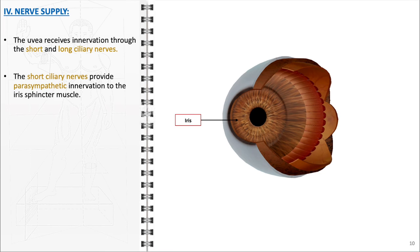The short ciliary nerves provide parasympathetic innervation to the iris sphincter muscle. This parasympathetic input originates from the Edinger-Westphal nucleus, travels with the oculomotor nerve, and synapses in the ciliary ganglion. The postganglionic fibers then reach the iris sphincter muscle, causing constriction of the pupil in response to light or for near vision focus.